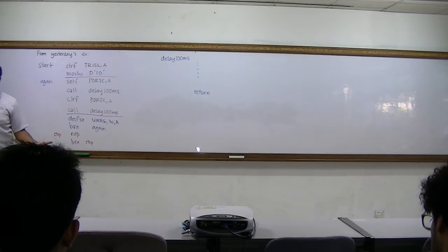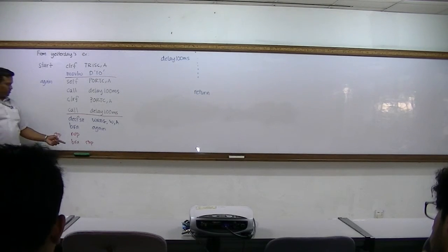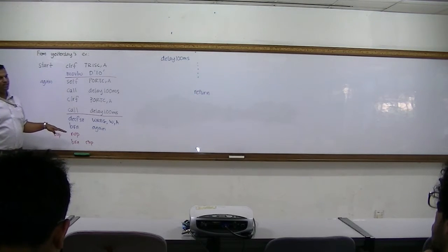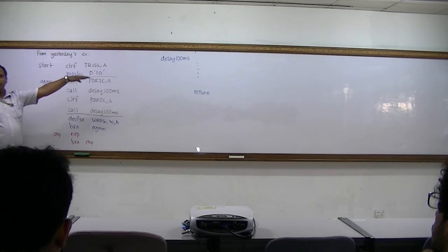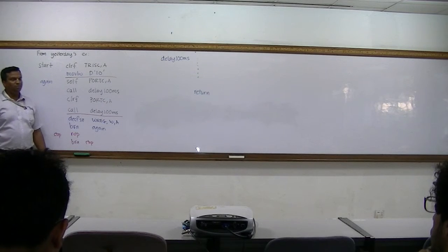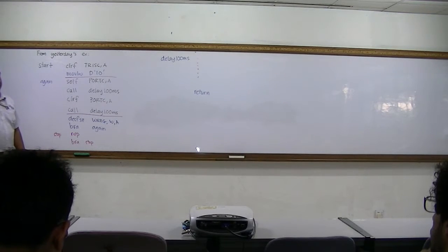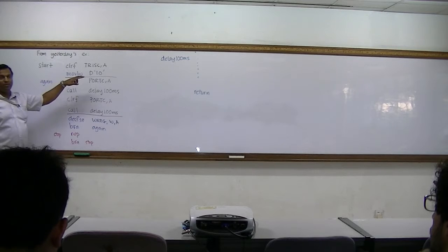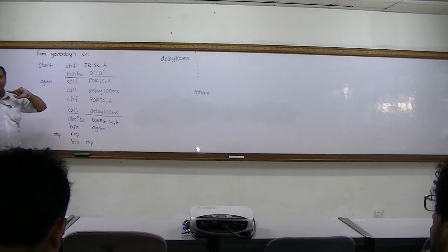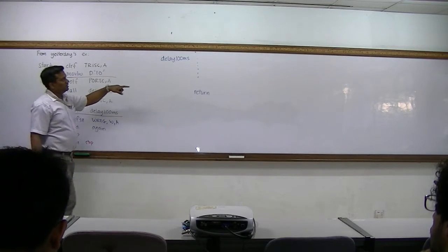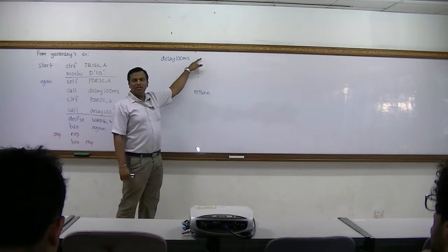That's one thing. So in any program, this is how you halt the program and prevent the PC from accidentally executing the subroutine. Now the second problem: here in the main program, I have used the working register as my loop counter. Do you notice that when you call the delay 100 milliseconds, here also you used the working register?